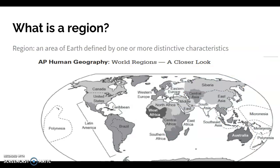When I ask for a region as an answer, that usually means something smaller than a continent but bigger than an individual country. On the map, you can see a couple of individual countries — Australia, Canada, and part of Russia — but most of the names shown are regions, not individual countries. So a region would be something like Western Europe, Central Africa, or East Asia — those are what we consider regions.